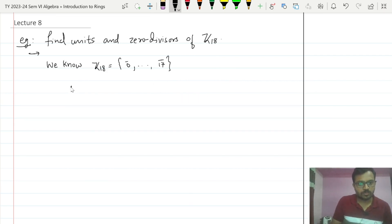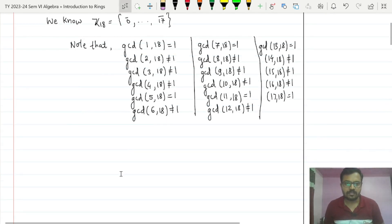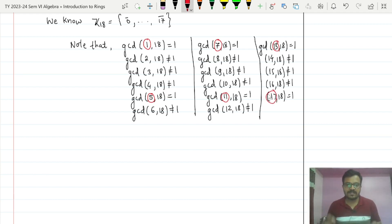We will say note that GCD of 1, 18 is equal to 1. Next, GCD of 2, 18 is not equal to 1. GCD of 3, 18 is not equal to 1. So we will continue doing it. As we see that the GCD of which elements is equal to 1? 1 then we are having 5 then we are having 7 then we are having 11 then we are having 13 and finally we are having 17. So these 6 elements are having GCD with 18 equal to 1.